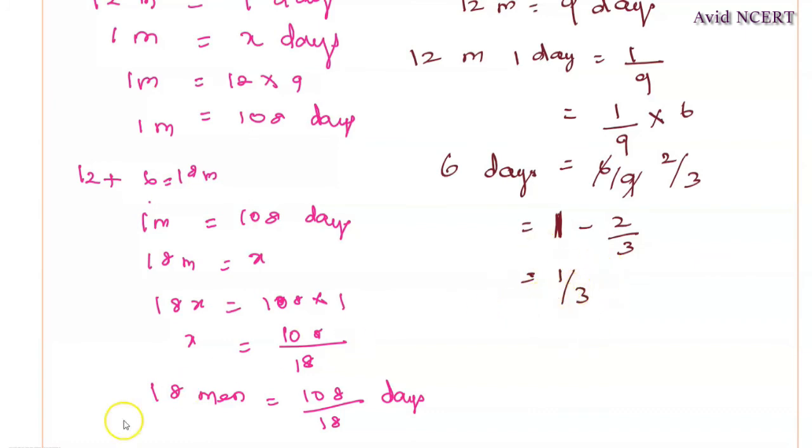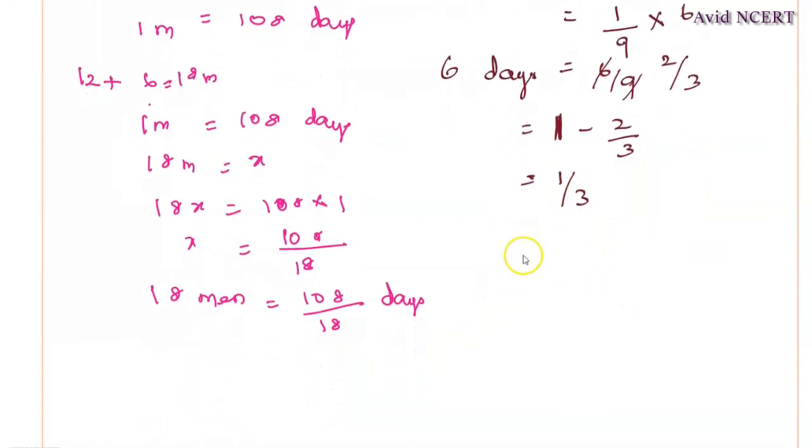This has to be completed by the 18 men, which equals 108 by 18 into 1 third of the work. Simplifying: 3 times 3 is 9, 3 times 6 is 18. This equals 2 days.